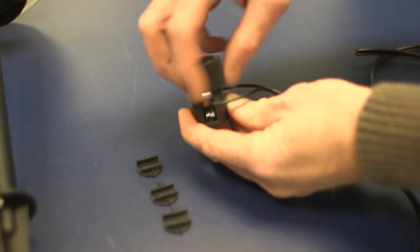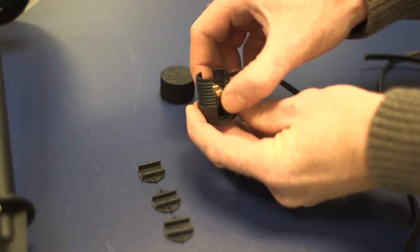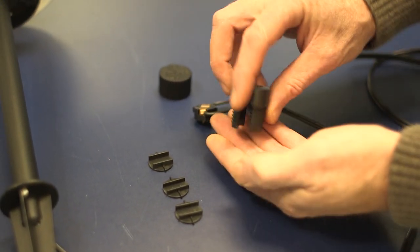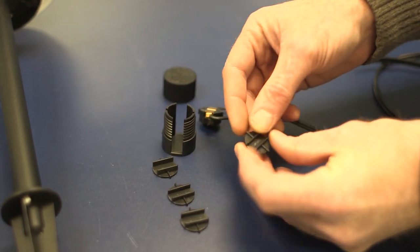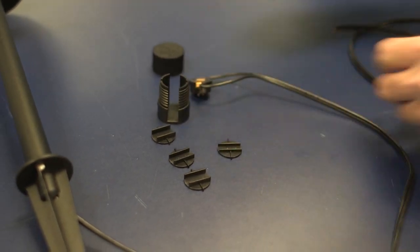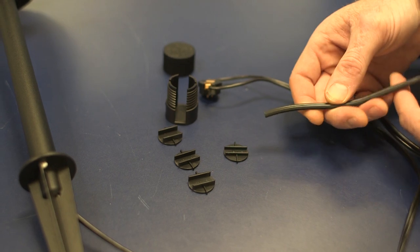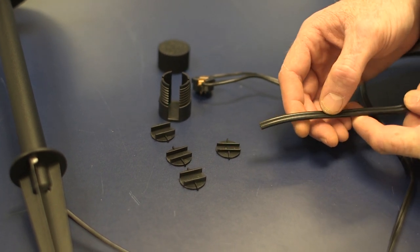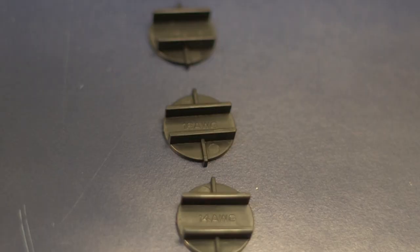To change out the plates for the different wire sizes, remove the connector and pick the correct plate. We're using a 16-gauge wire in this application, so we want to make sure that we use the correct 16-gauge plate.